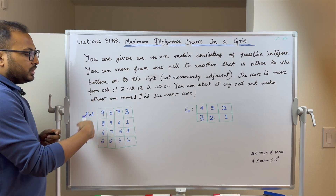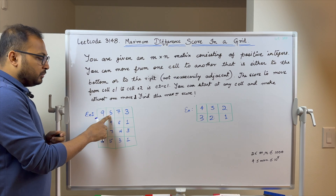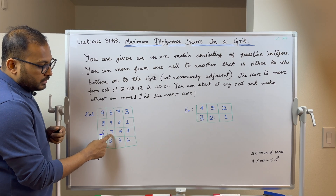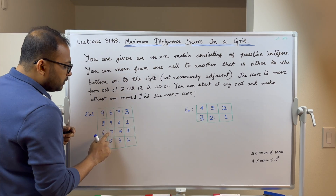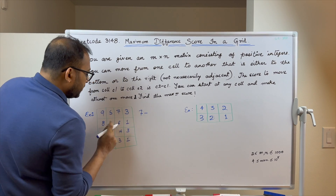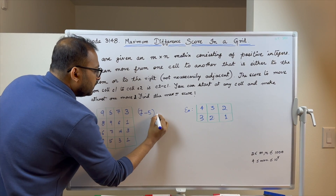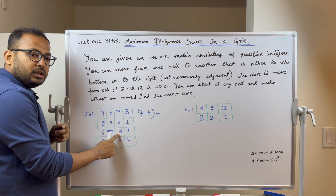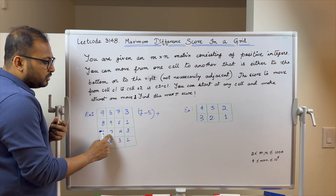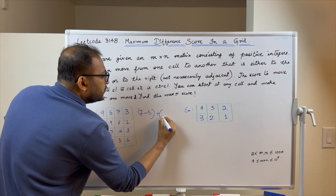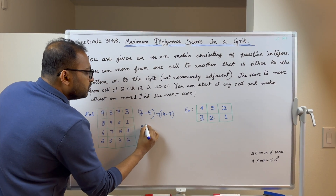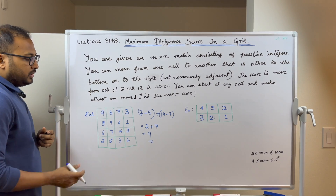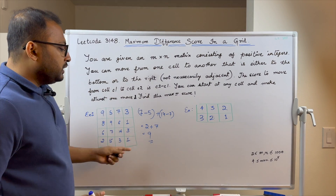In the first example grid, starting from a particular cell and making two moves: first jumping to a cell below with value 7 from value 5, giving a score of 7−5=2; then jumping right to a cell with value 14, giving 14−7=7. Total score is 2+7=9, which is the maximum achievable in this grid.